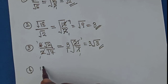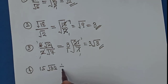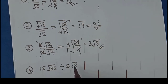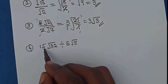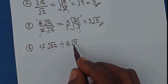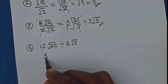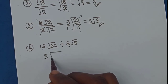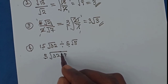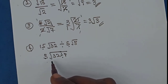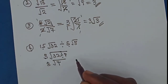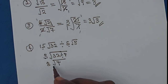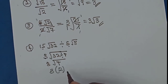Another example: 15 root 32 divided by 5 root 8. The rational parts divide: 15 divided by 5 gives 3. The radicands divide: 32 divided by 8 gives 4, and root 4 is 2. So we have 3 times 2, which equals 6. That's the final answer.